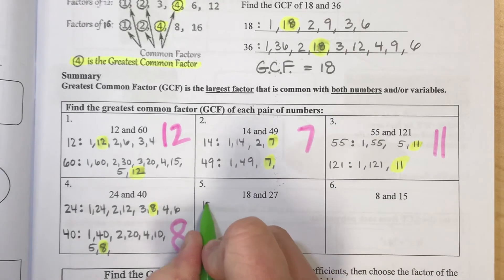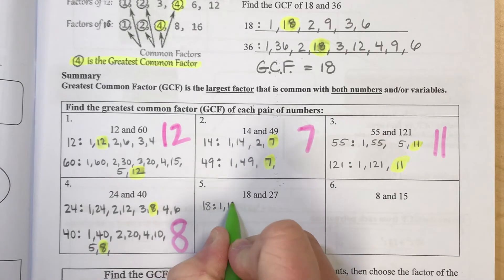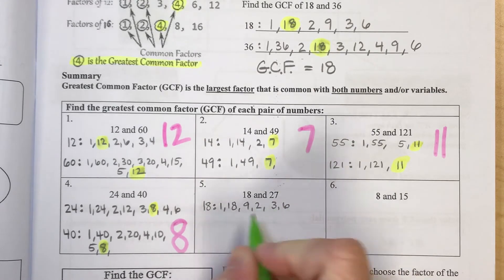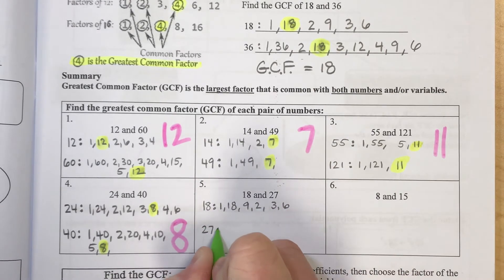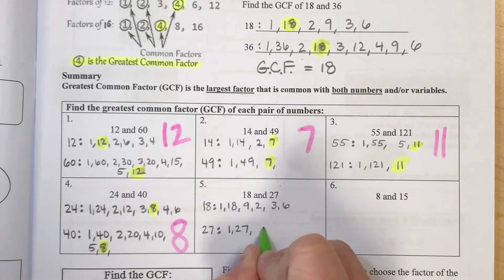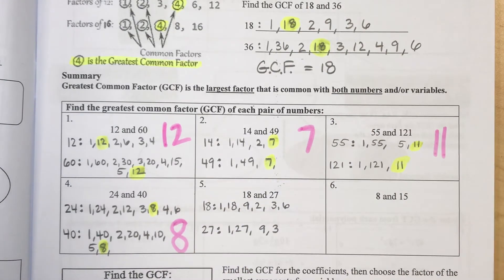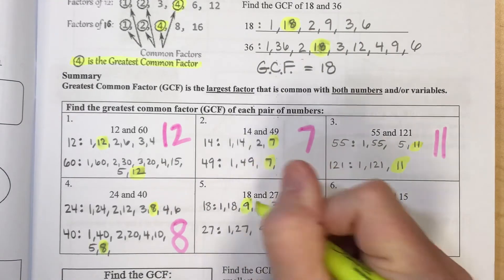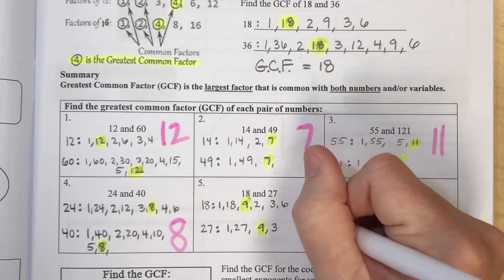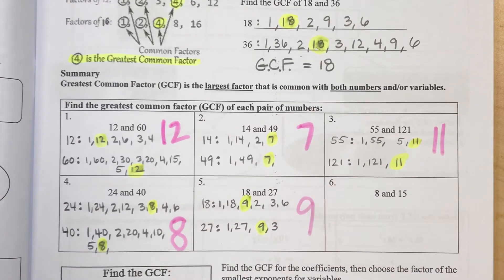And for 18, 1 and 18, 9 times 2, 3 times 6. And for 27, numbers that multiply to make 27 would be 1 and 27, and 9 times 3. And I notice that 9 is my biggest number in both of those lists. So 9 would be my greatest common factor.